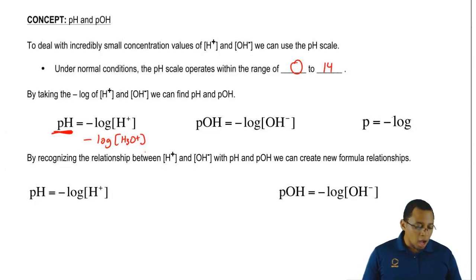pOH is the negative log of OH minus, so that means that p represents negative log.